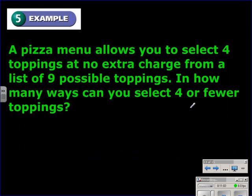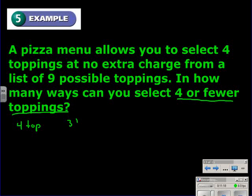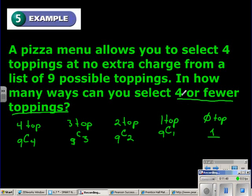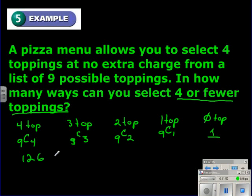Example 5. A pizza menu allows you to select 4 toppings at no extra charge from a list of 9 possible toppings. In how many ways can you select 4 or fewer toppings? The words 4 or fewer toppings implies we're going to have to find more than 1 combination. We're going to have to find 5 combinations: for 4 toppings, for 3 toppings, 2 toppings, 1 topping, and 0 toppings. The first one would be 9 choose 4, then 9 choose 3, 9 choose 2, 9 choose 1, and for 0 toppings there's only one way to order that. Using your calculator, you'll find these combinations, and you need to add these things up. The sum would be 256. So there are 256 ways to order a pizza with 4 or fewer toppings.